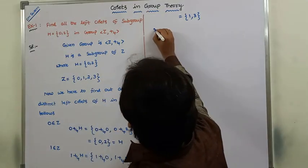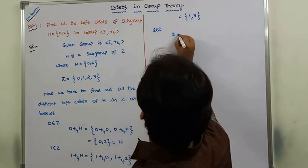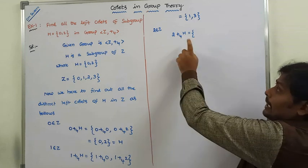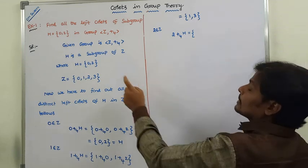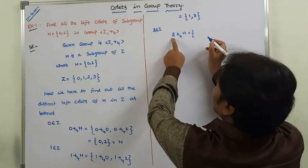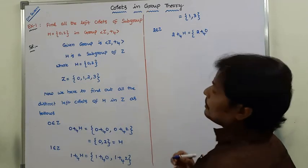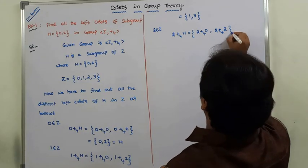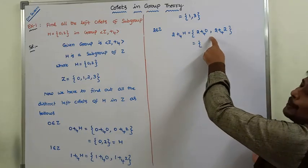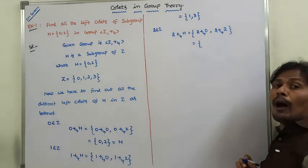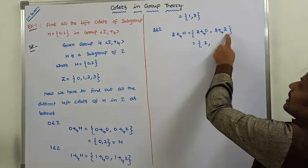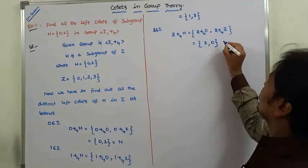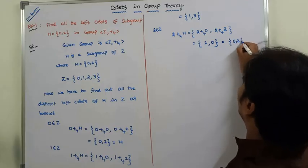Next, taking element 2, which belongs to Z. Element 2 is combined with all elements of H using addition mod 4. So: 2 +mod4 0 = 2, and 2 +mod4 2 = 4, and 4 mod 4 = 0. Therefore 2+H = {0, 2}, which equals H.